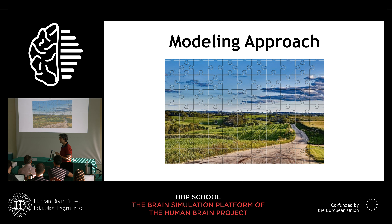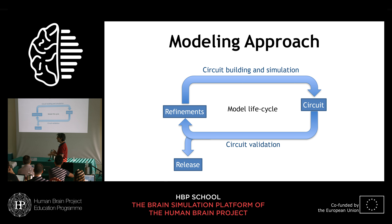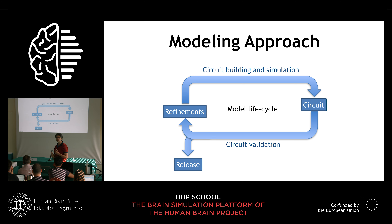This is a schematic of the model life cycle. We build a model, simulate it, and obtain a working circuit. Then we run validation to assess how good our assumptions were. If we fail, it doesn't matter — we plan the next refinements and continue iterating. When we have a version of the circuit that satisfies us, we release it. The key point is that we want to make this cycle quite quick — we don't want to get stuck in details trying to build a perfect model before validating.